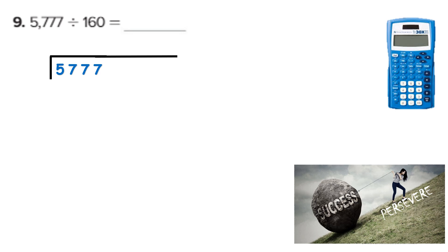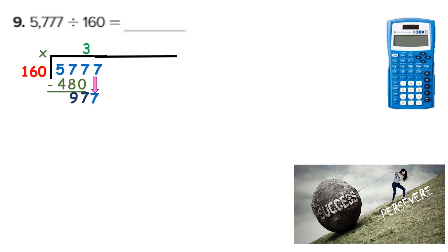What about 5,777 divided by 160? Now we have a three-digit divisor, but I do the exact same math. Will 160 go into 5? No. Will 160 go into 57? No. Will 160 go into 577? Yes. When I type 577 divided by 160 into my calculator, I get 3 and stuff, because 3 times 160 is 480. I subtract: 7 minus nothing is 7, and I can't take 8 from 7, so I borrow. 5 becomes 4 and I have 17. 17 minus 8 is 9. I bring down my 7. I type 977 divided by 160 and get 6 and stuff. 6 times 160 is 960.